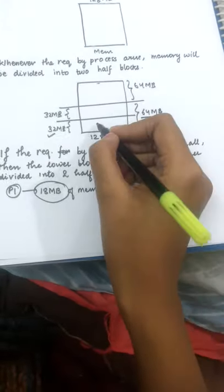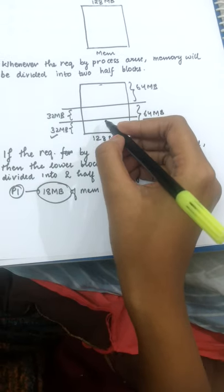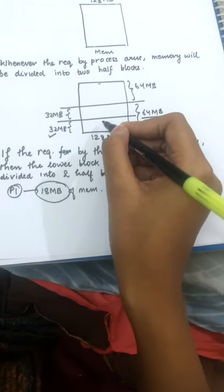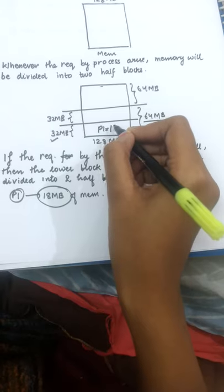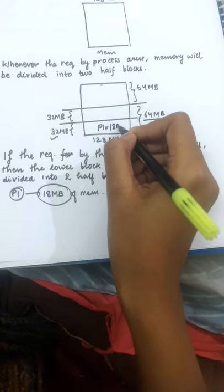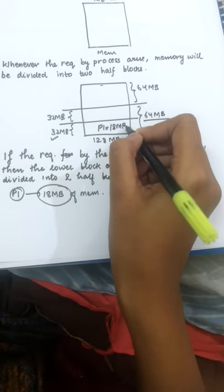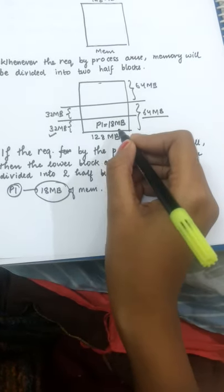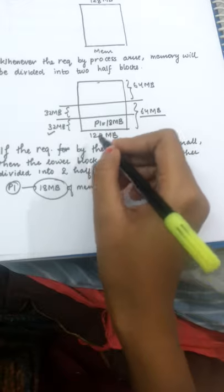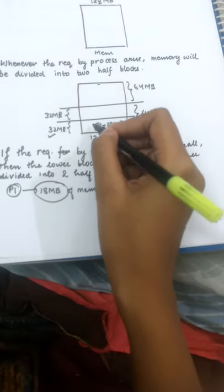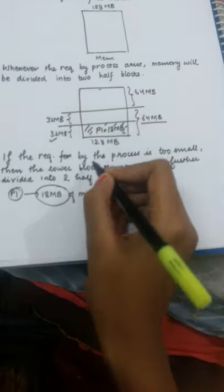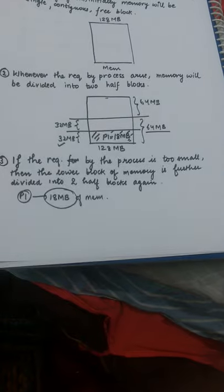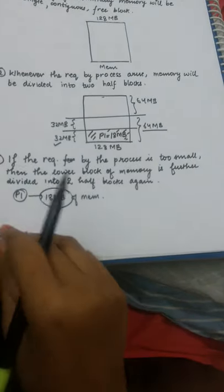So we will be allocating process P1, which requires 18 MB, into that 32 MB block. This is how we fulfill the request made by the process.